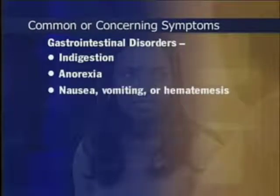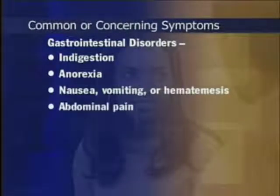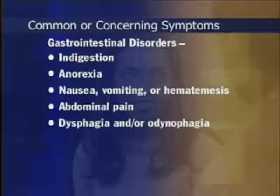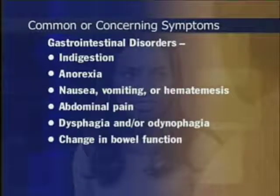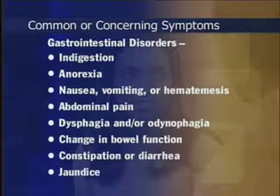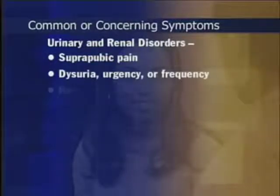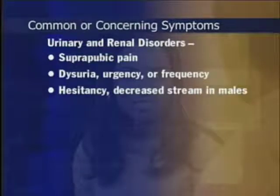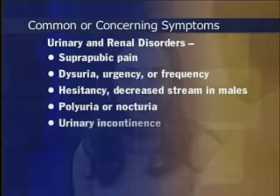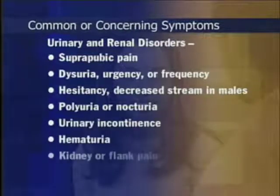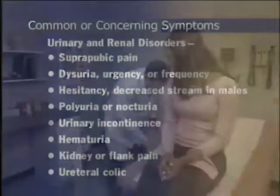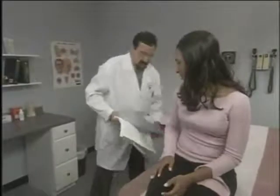Common or concerning symptoms relating to the abdomen specific to gastrointestinal disorders include indigestion or anorexia, nausea, vomiting or hematemesis, abdominal pain, dysphagia and/or odynophagia, change in bowel function, constipation or diarrhea, and jaundice. Symptoms specific to urinary and renal disorders include suprapubic pain, dysuria, urgency or frequency, hesitancy, decreased stream in males, polyuria or nocturia, urinary incontinence, hematuria, kidney or flank pain, and ureteral colic. By eliciting the patient's concerns before the examination, you prepare for an examination that is efficient and productive.